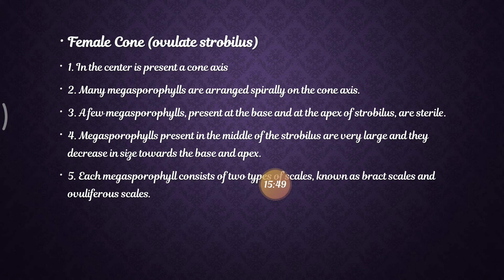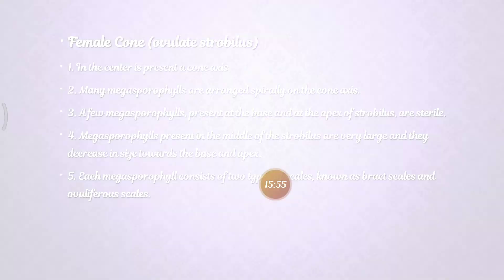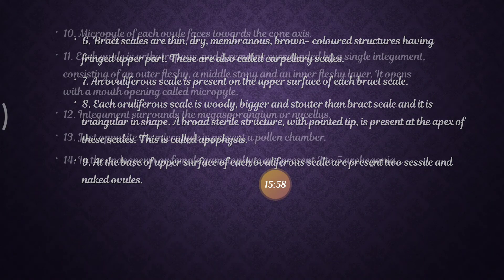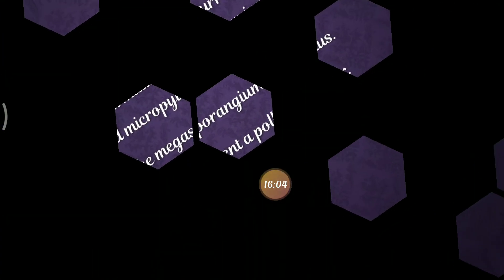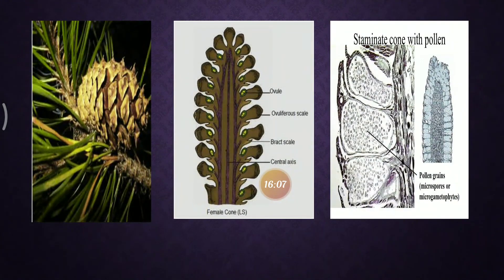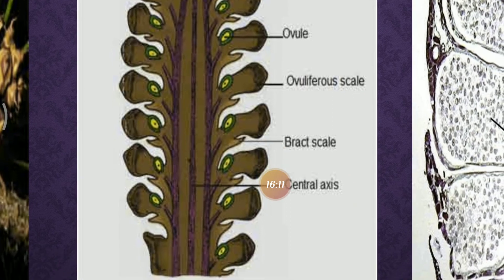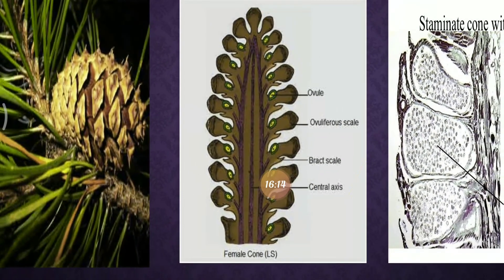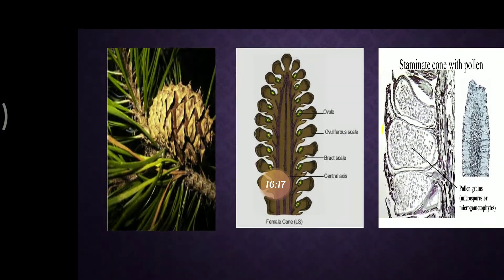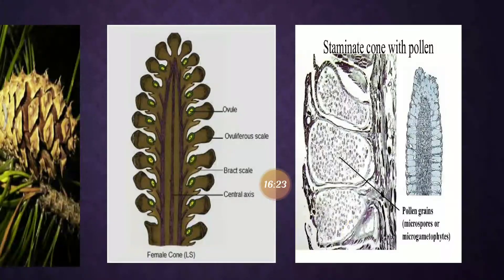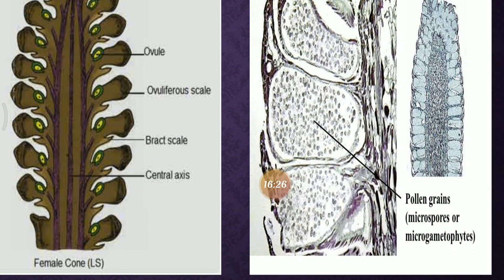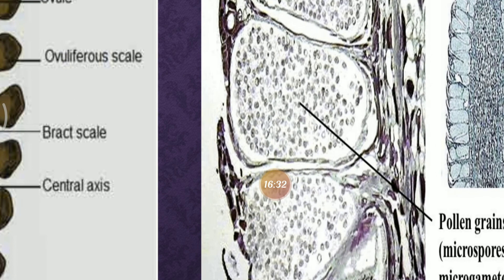Each megasporophyll consists of two types of scales: bract scales and ovuliferous scales. In the image, the bract scales and ovuliferous scales are clearly visible, along with the ovule and central axis of the female cone. When observed under the microscope, the staminate cone with pollen grains shows the microspores or microgametophytes placed inside.